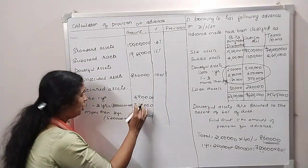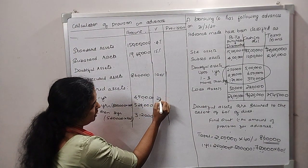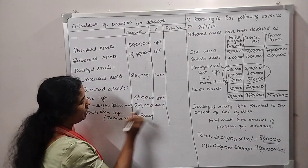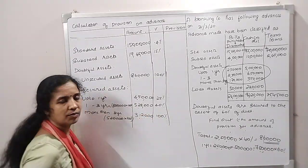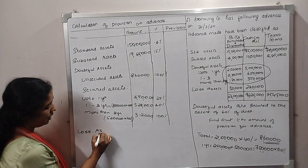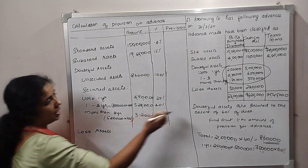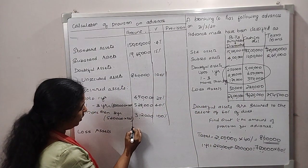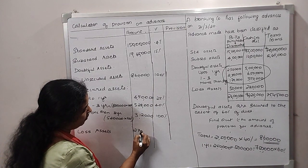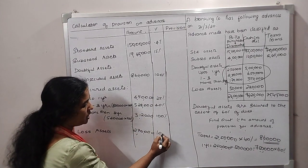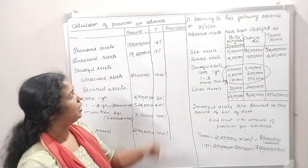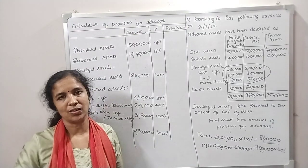For up to 1 year we have 40%, for more than 3 years we have 100%. Now we have loss assets. Loss assets are 50,000 and 2,20,000. That totals 2,70,000. The provision percentage is 100%.